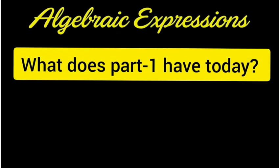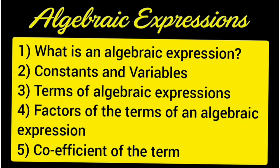Dear children, today's topics are: Number one, what is an algebraic expression? Number two, constants and variables. Number three, terms of algebraic expressions. Number four, factors of the terms of an algebraic expression. And number five, coefficient of the terms.